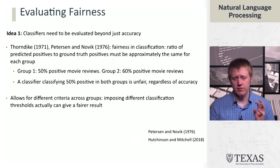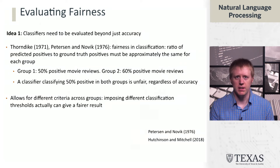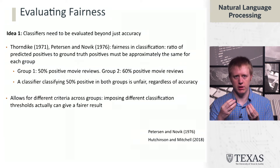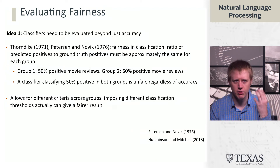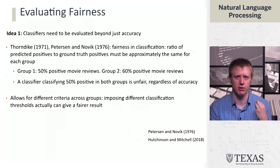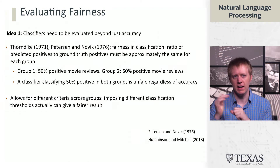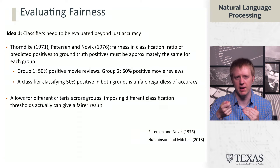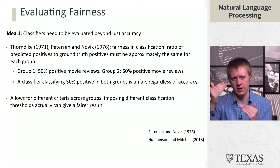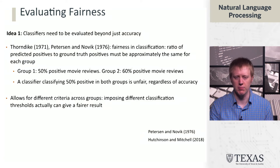The formalism from Peterson and Novick allows for using different criteria across groups, for example imposing a different classification threshold. Counterintuitively, this can actually give a fairer result: if the classifier on group two tends to under-predict positive, we can turn the threshold for positive prediction down a little bit so that more things get predicted as positive.